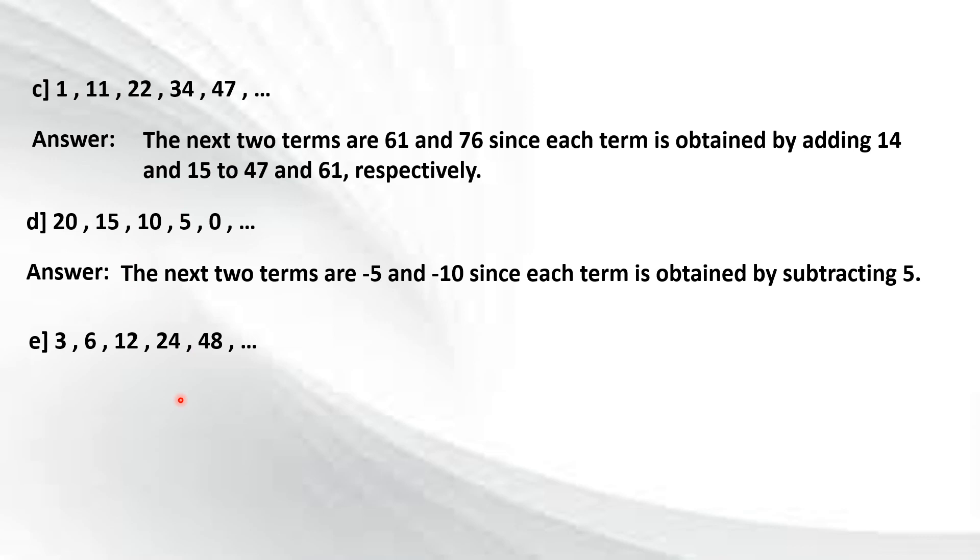Fifth example: we have 3, 6, 12, 24, and 48. So ang pattern natin dito is that the next two terms are 96 and 192 since each term is obtained by multiplying 2. So we have 3 times 2, that's 6. Then times 2, 12. Times 2, 24. Then times 2 is 48.